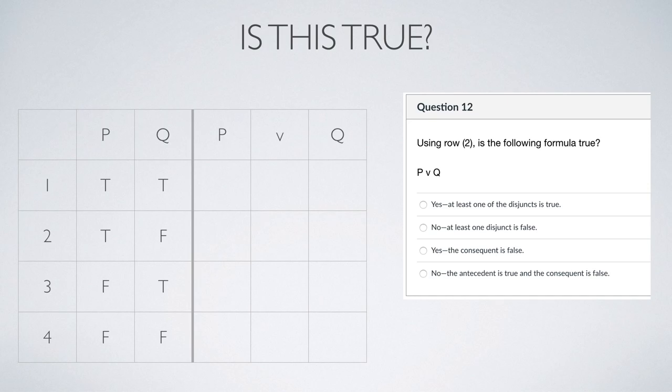Following rule seven, we copy and paste the truth assignments for p and for q. I want to emphasize how easy it is to do this if you already have a table loaded in a spreadsheet. You simply copy and paste a bunch of these tables as a template, and it'll make your life so much easier. So we've got our truth assignments now.